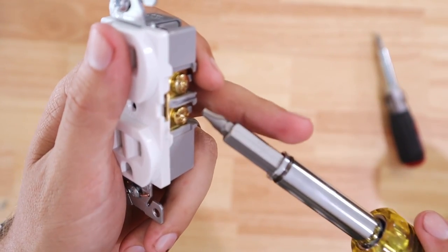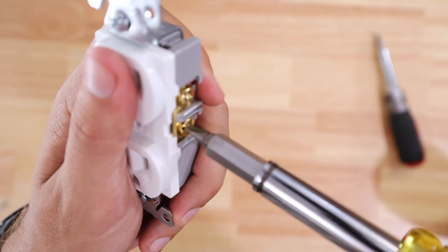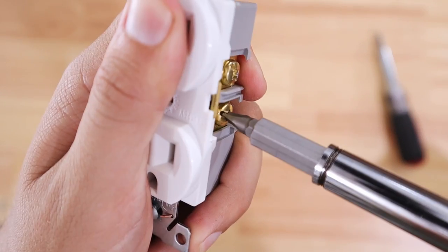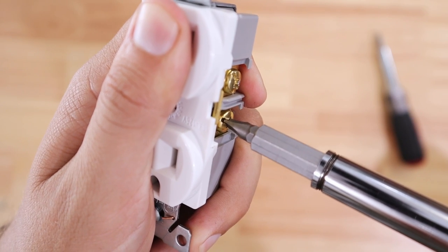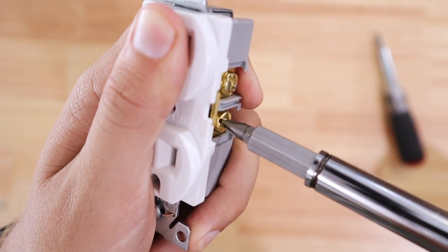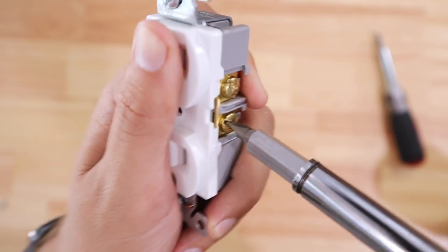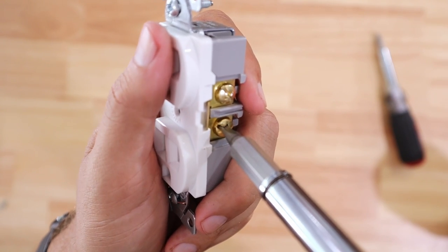If I take the combination bit of the Klein, and I put it in there, there's almost no play there whatsoever. There's definitely a noticeable difference as far as how tight these fit into the terminal screws.